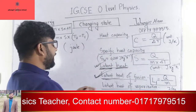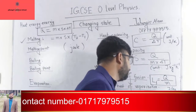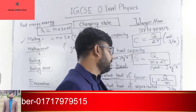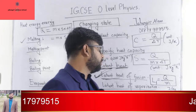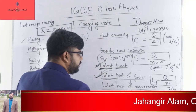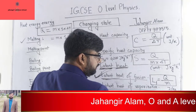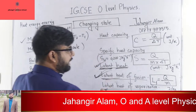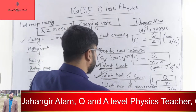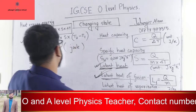On the other hand, latent heat of vaporization, denoted by LV, is the amount of heat energy required per unit mass to change a substance's state from liquid to vapour without changing its temperature — that means at the boiling point. This is known as the latent heat of vaporization.